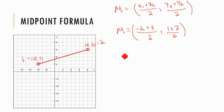And if we simplify that, we will get negative 2 plus 4 is 2 divided by 2 is 1. 1 plus 3 is 4 divided by 2 is 2, so our midpoint is at 1, 2. And let's go back to the graph just to see where that is. So if we go over 1 and then up 2, look there is our midpoint right in between both endpoints.